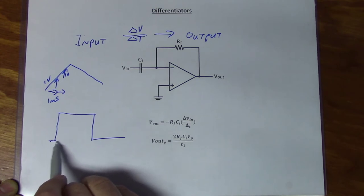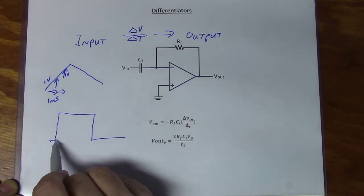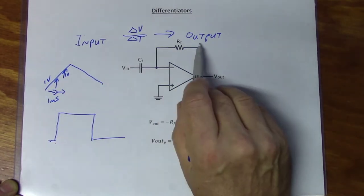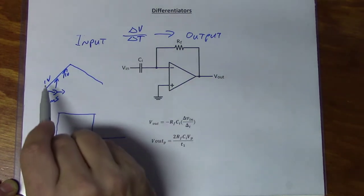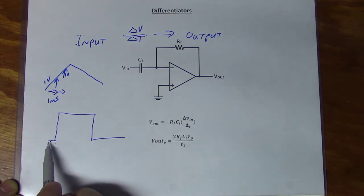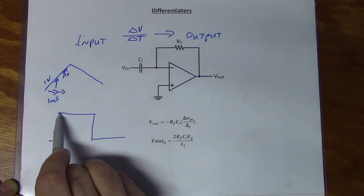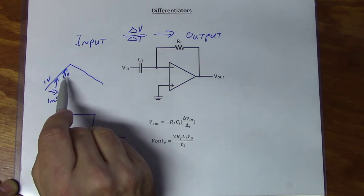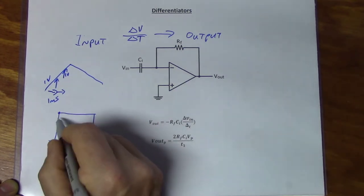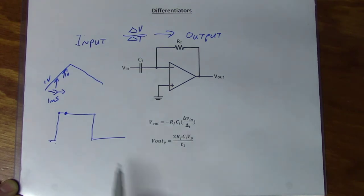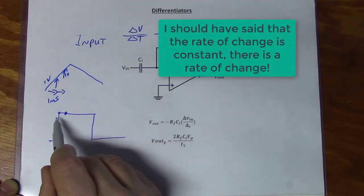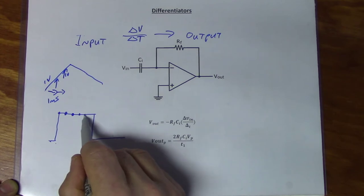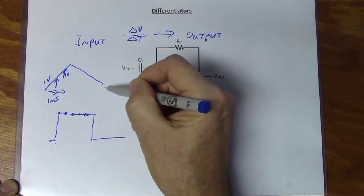Starting at time zero, we have a beginning of a rate of change, so we create a voltage. The output voltage amplitude is proportional to how fast this change is. We have a steady rate of change, so the voltage begins to go up. In the next period, the rate of change is exactly the same, so the output is not going to increase — it stays at that point. Everything stays steady all the way across.